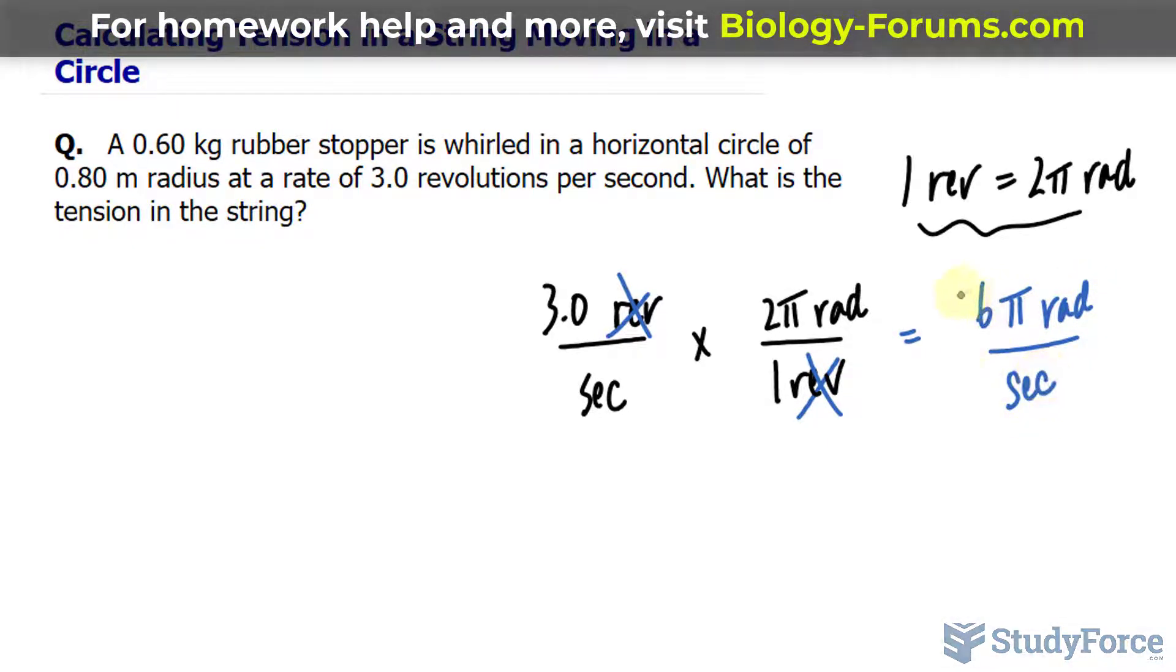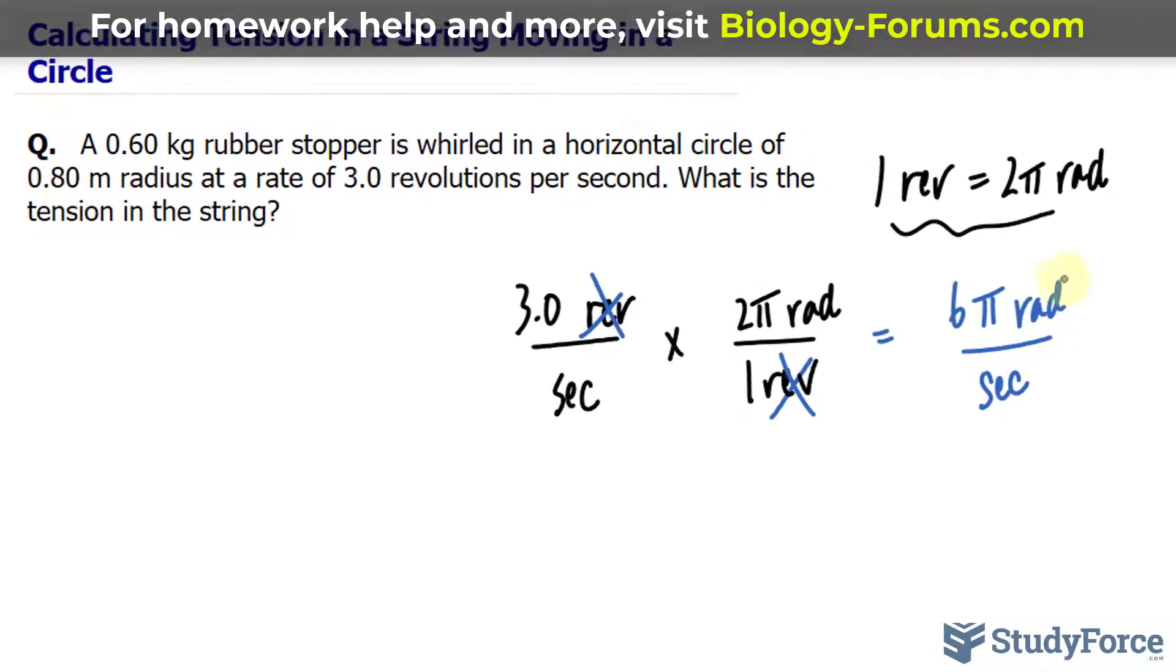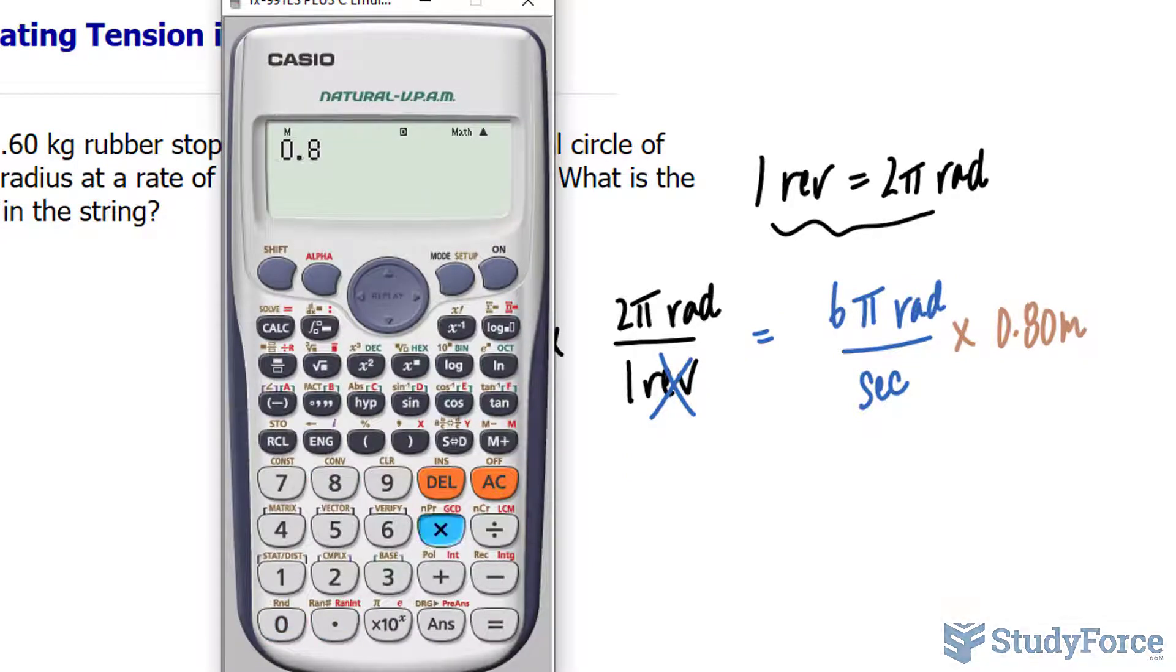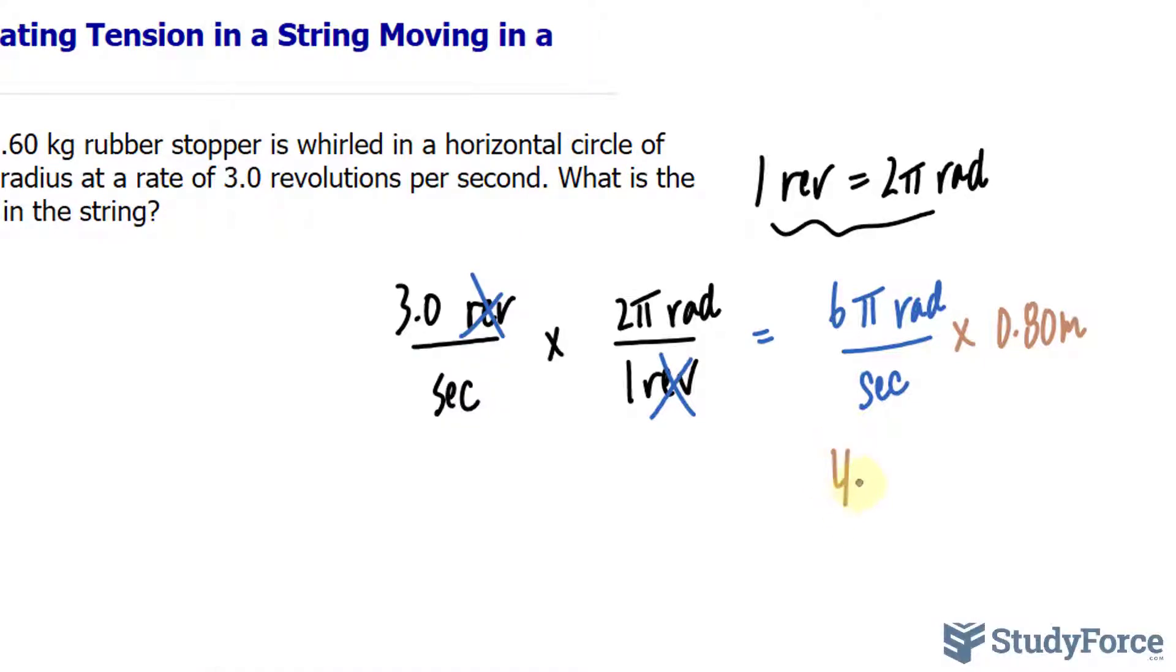At this point, if I multiply this number by the radius of 0.80, so if I multiply this by 0.80 meters, I'll end up with 0.80 times 6 pi. So 0.80 times 6, that is 4.80 pi radians meters per one second.